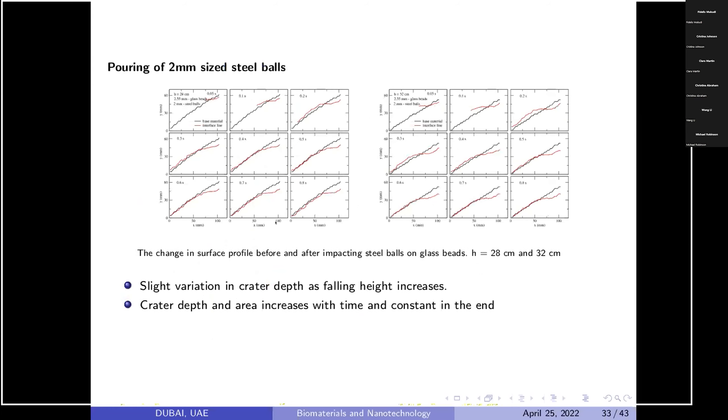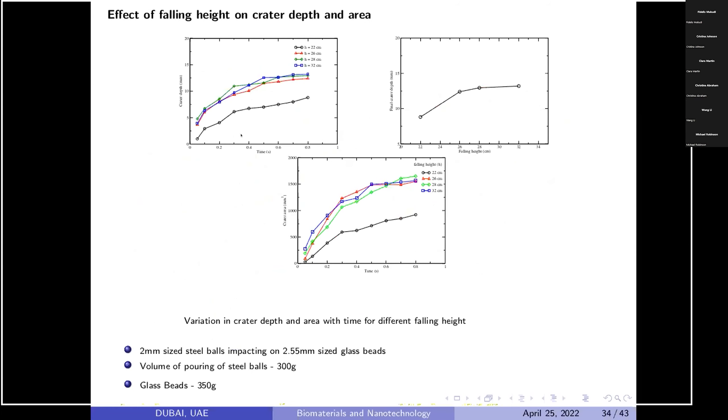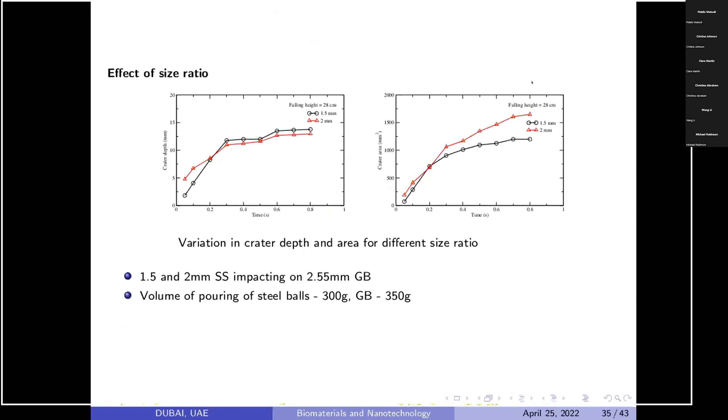Similarly we have done it for 2 mm, then 3 mm. We have studied effect of height on coke crater depth. We have realized that for height between 22 to 28 centimeter, the black line is for 22 centimeter and the blue, green, and red is for 26, 28 and 32, it does not have any effect. Crater depth of course increases with falling height, and then after some time it remains constant. Effect of size ratio also we have studied and we observe that obviously when it is 1.5 mm and when it is 2 mm, we got a different result.